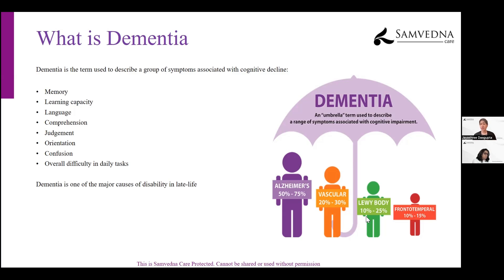The next most prevalent type is vascular dementia, which is related to things like stroke. Then Lewy body dementia, where the pathological underpinning is Lewy bodies. Frontotemporal dementias result in a lot of behavioral changes and account for about 10 to 15 percent of dementias. It's important to remember that dementia is a wide term, and symptoms can be very different from one person to another.